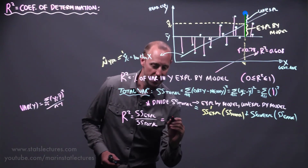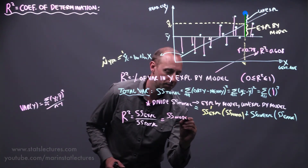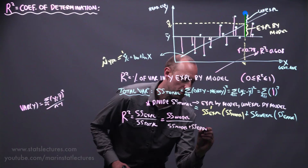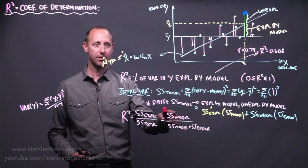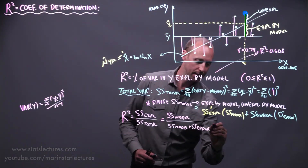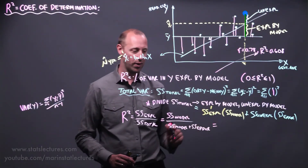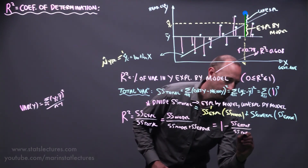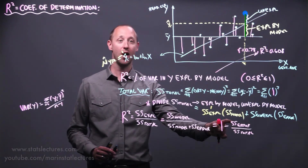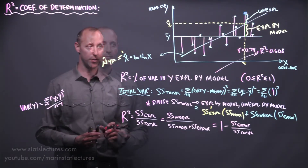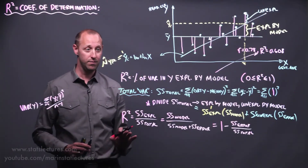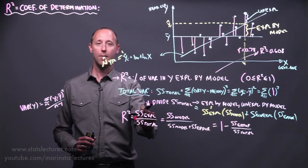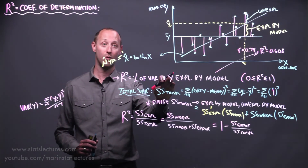You can also write r-squared as the sum of squares model over the sum of squares model plus the sum of squared error — that is, over the total sum of squares — representing what fraction of the total variability in y can be explained by the model. It can also be written as 1 minus the sum of squared error over the sum of squares total: out of the total variability in y, subtract the fraction that cannot be explained by the model to get how much can be explained. This is the visual representation of r-squared.